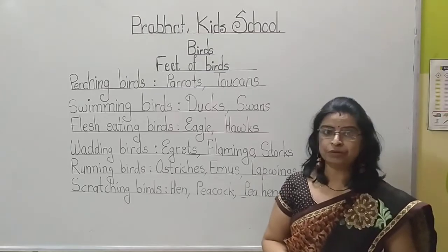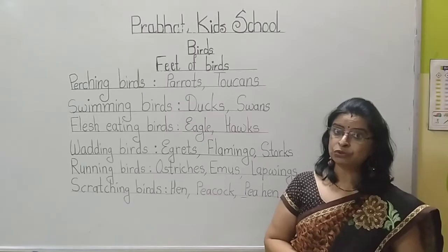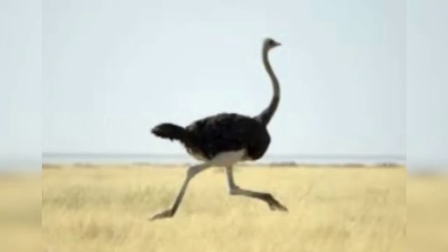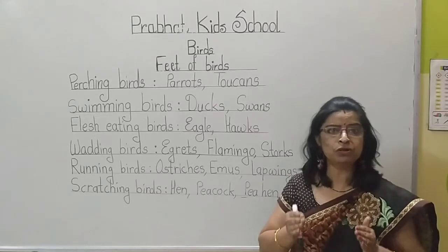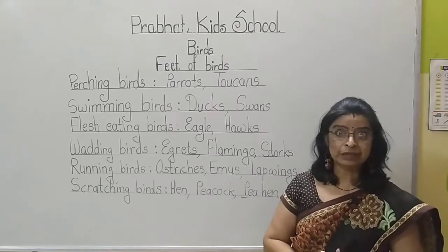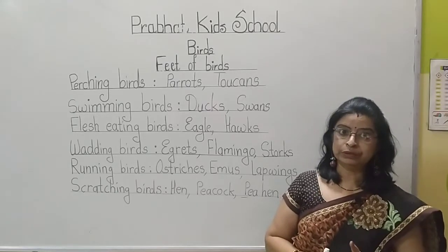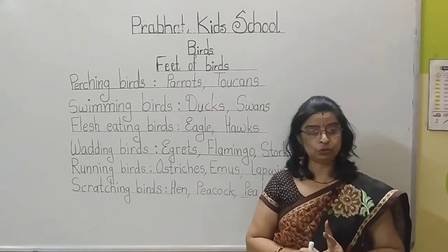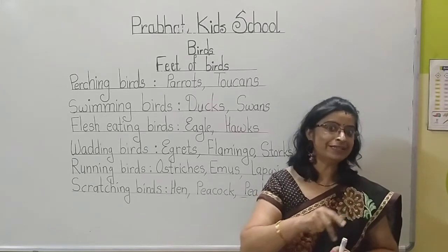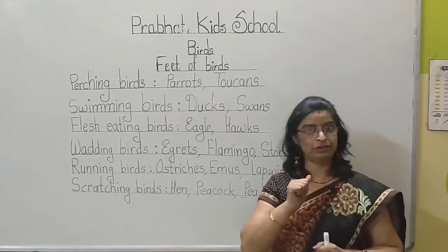Running birds. These birds have strong and long legs. They have only two toes on each foot. The reduced number of toes helps them to walk faster or run faster on the ground.